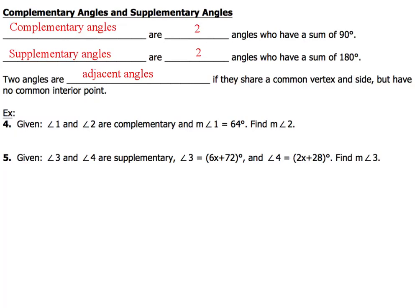Alright, today we're going to take a look at complementary angles and supplementary angles. Complementary angles are two angles that have a sum of 90, and supplementary angles are two angles that have a sum of 180 degrees.